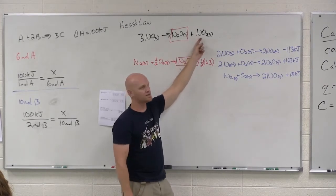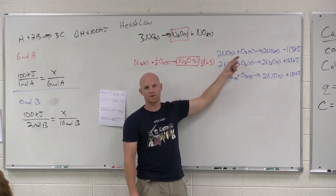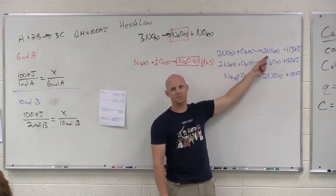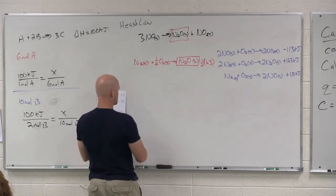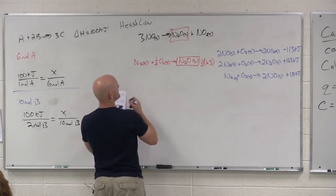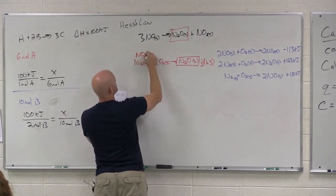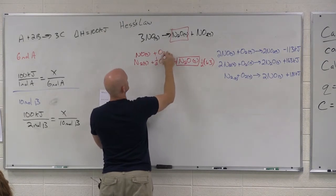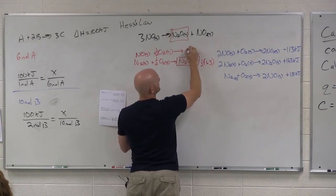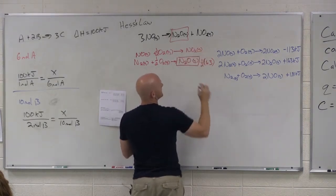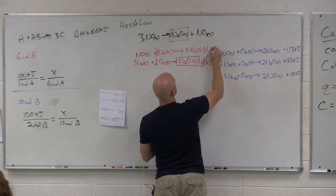Now I need NO to be a product. Is NO a product here? Yes. I need exactly one mole at exactly one mole. No, it's two moles again, so I need to divide this one by two as well. So in this case, NO gas plus one half O2 goes to NO2 gas. And again, if this reaction is negative 113, then this one is going to be half of negative 113.